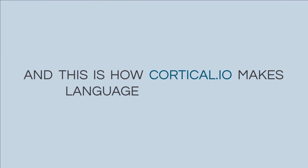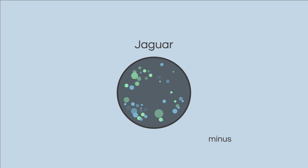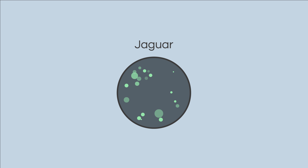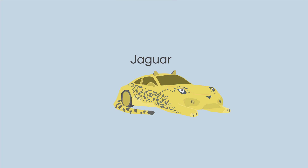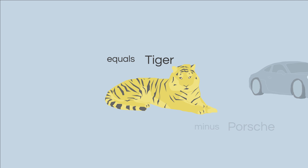And this is how Cortical.io makes language computable. Take the fingerprint of the word Jaguar, remove the sports car context represented by the fingerprint of Porsche — what do you get? A fingerprint which is strikingly similar to Tiger, or other big cats like Pumas, Panthers and Cougars. In short: Jaguar minus Porsche equals Tiger.